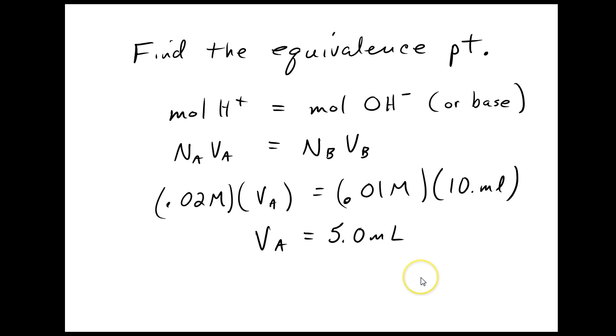First thing we've got to do is find the equivalence point. That's NAVA equals NBVB. And I'm just going to put all my numbers in here, solve for VA, and it's 5 milliliters. This should not be that surprising. Since the acid was twice as strong, we only need half as much to neutralize 10 milliliters of the base.